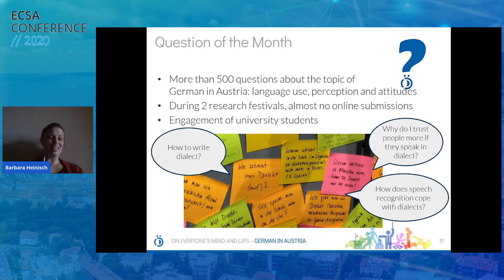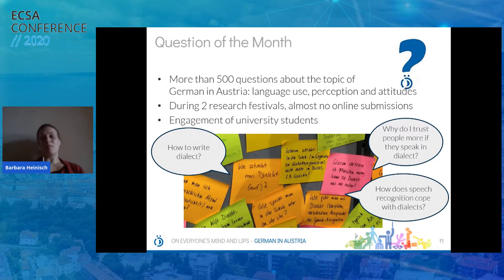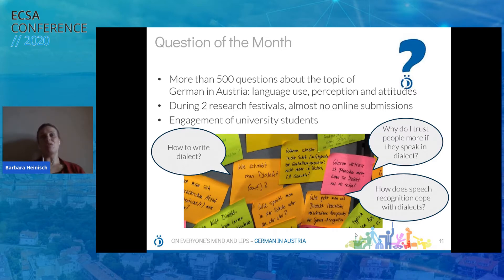Then we had face-to-face meetings during science communication festivals — for example, the Long Night of Research and other Austrian science communication festivals. During these festivals we collected more than 500 questions about German in Austria: language use, perception, and attitudes. We also engaged university students in the research. After collecting questions, there are two possible scenarios: either there is already an answer in academia, in which case researchers provide it — more like science communication — or there is a knowledge gap and the research doesn't have an answer yet.